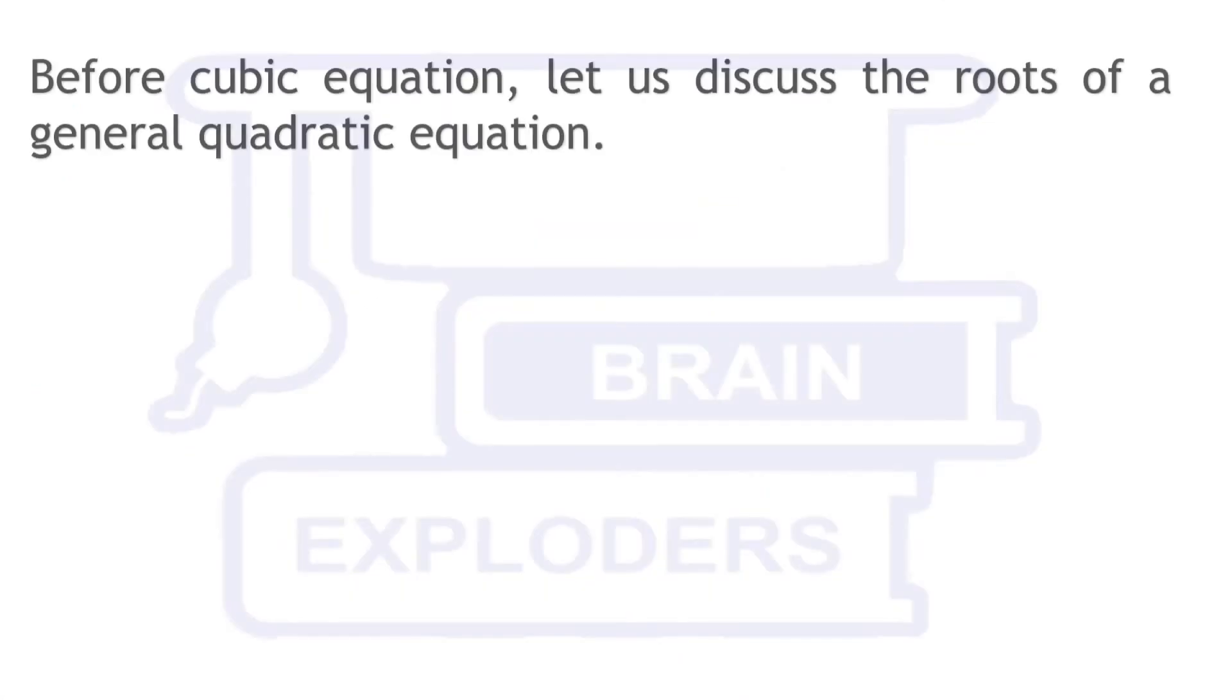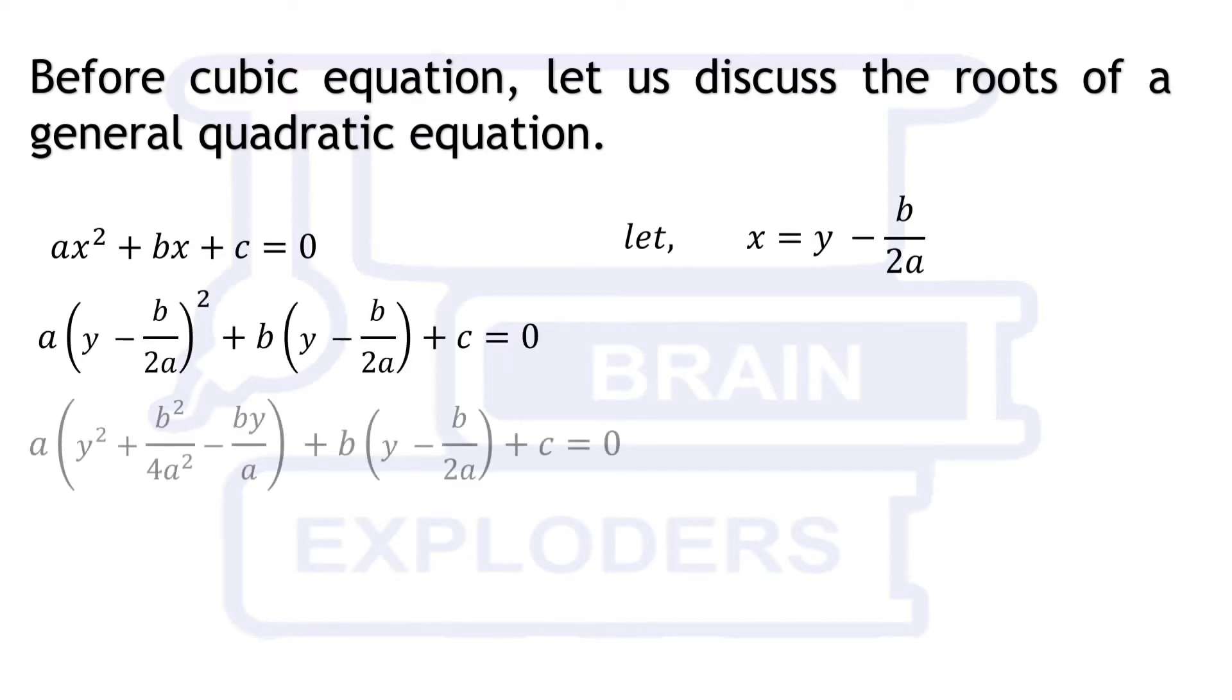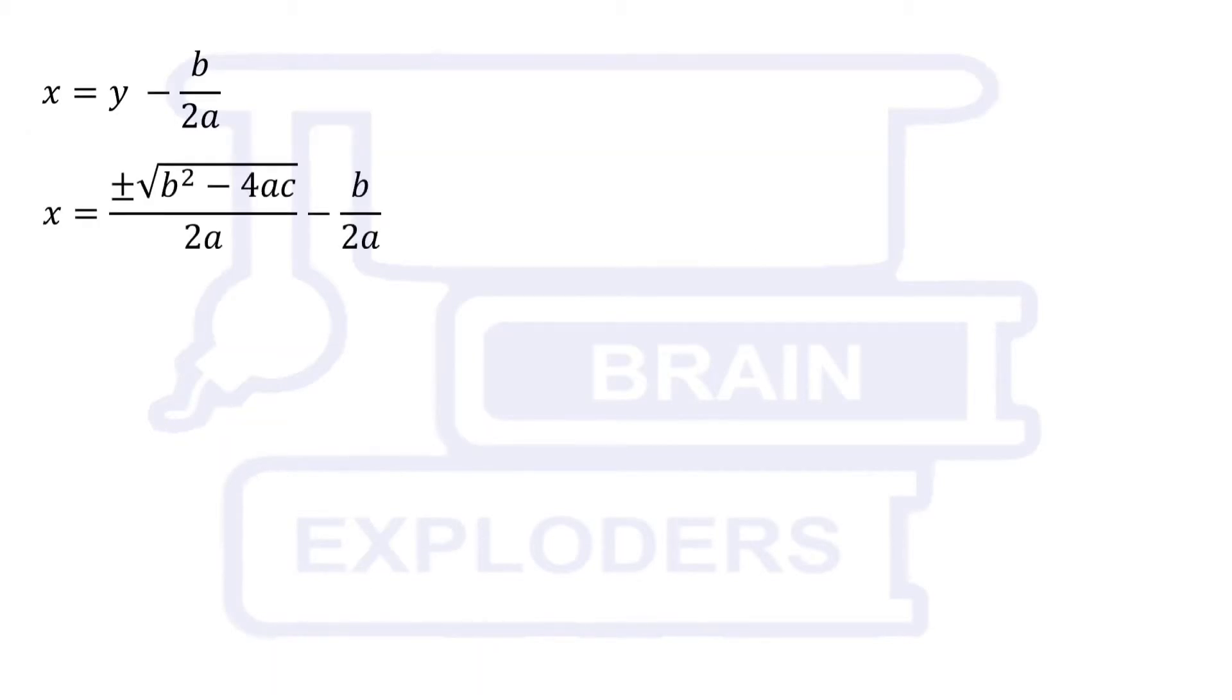Let us start by the discussion of quadratic equation. To convert this general quadratic equation into another which has no first degree term, put x equals to y minus b over 2a. All the terms of one degree get cancelled. We get y equals to plus minus under root b squared minus 4ac over 2a. Substitute the value of y in this equation. This gives us the formula for the roots of general quadratic equation.